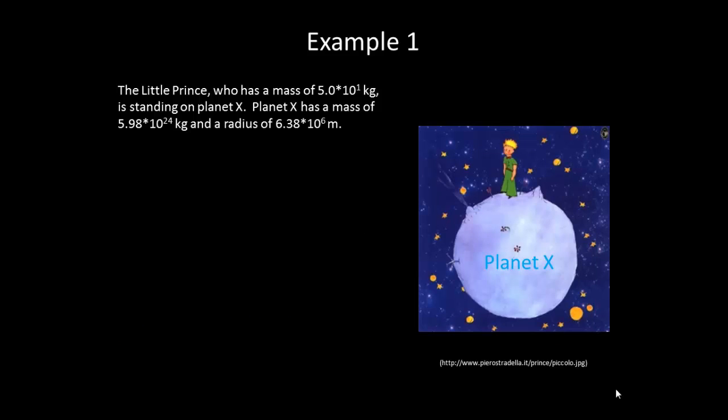Alright, so let's continue our problem. What is the force of gravity acting on planet X by the little prince? Well, according to Newton's third law, the force should have the same magnitude but in the opposite direction. So, we should have 490 newtons upwards acting on planet X.